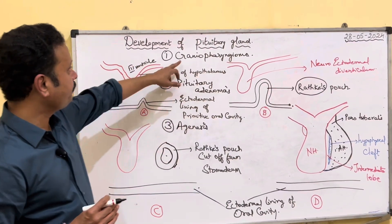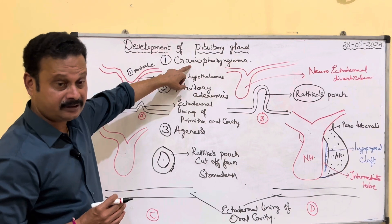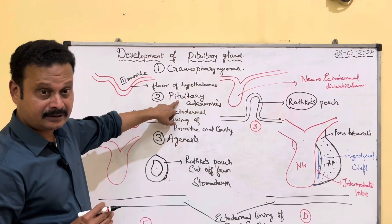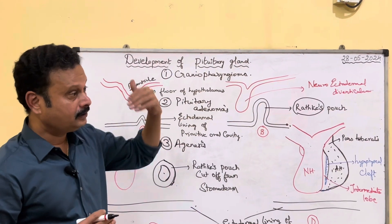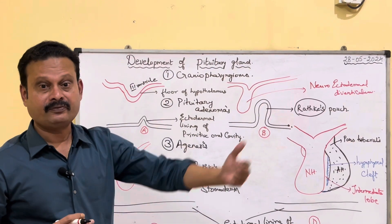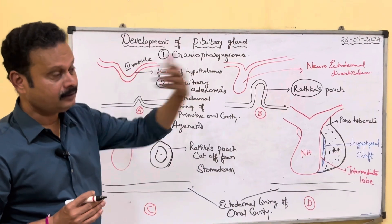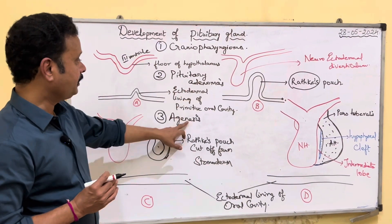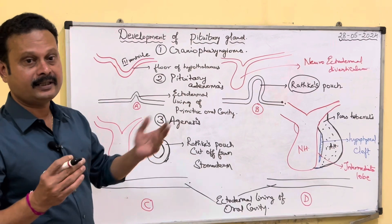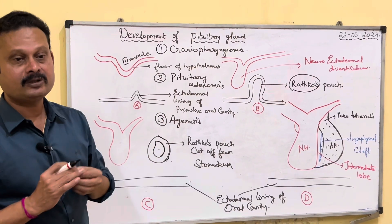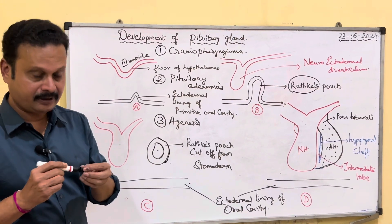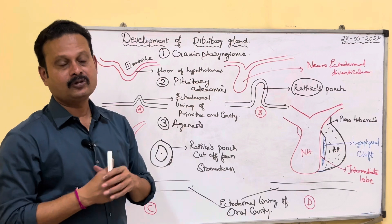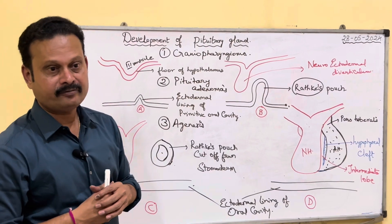To summarize: anomalies include craniopharyngioma; the commonest pituitary tumours — acidophil adenoma, chromophobe adenoma, and basophil adenoma; agenesis of the gland; and rarely, abnormal position of the pituitary gland in the posterior wall of the pharynx.